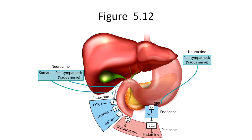Here's figure 5.12 from your text. As you can see, there are three categories of hormones, which are each color-coded. In blue are the endocrine hormones, in green are the neurocrine hormones, and in red are the pericrine hormones.